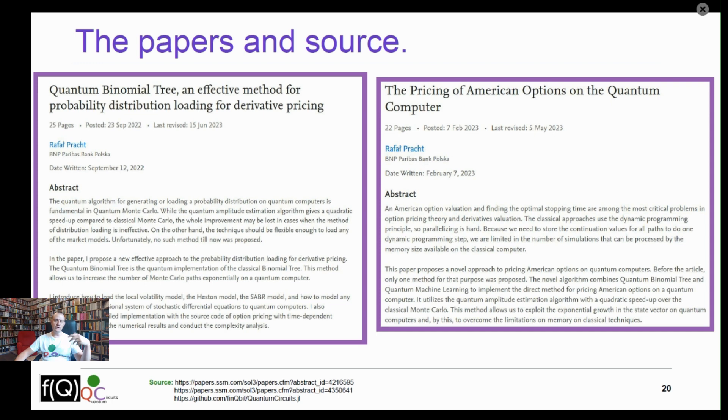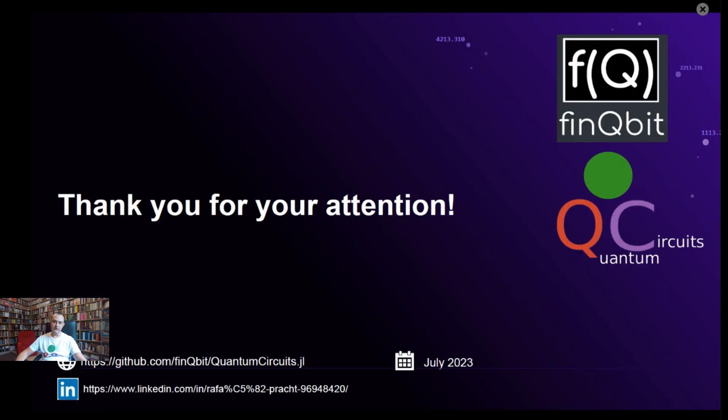And if you want to learn more, I strongly recommend our paper Quantum Binomial Tree and the Pricing of American Options, as well as see the source on the GitHub repository. Thank you for your attention.